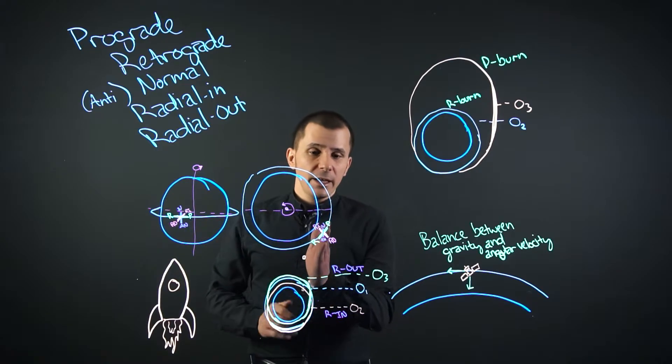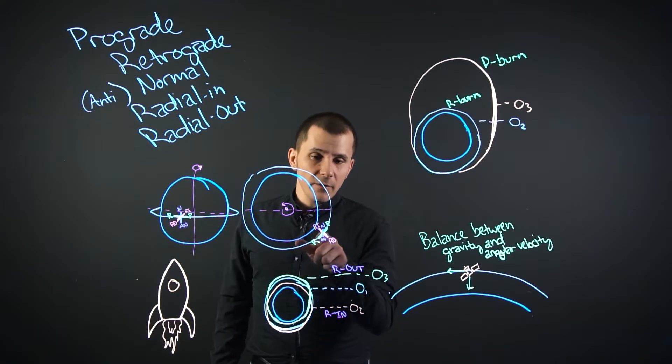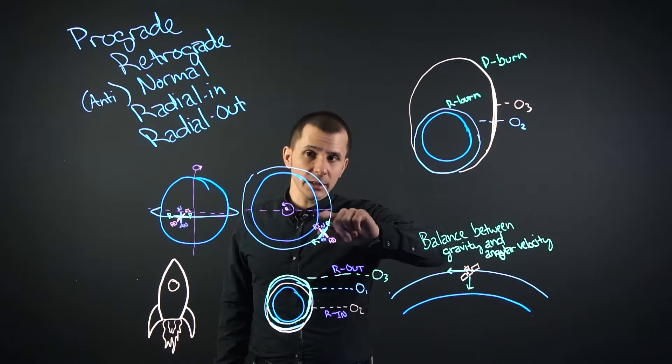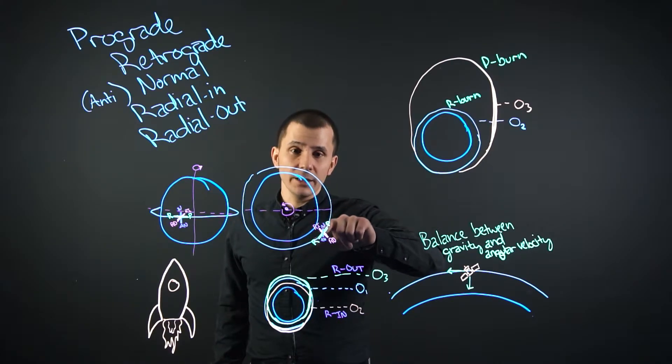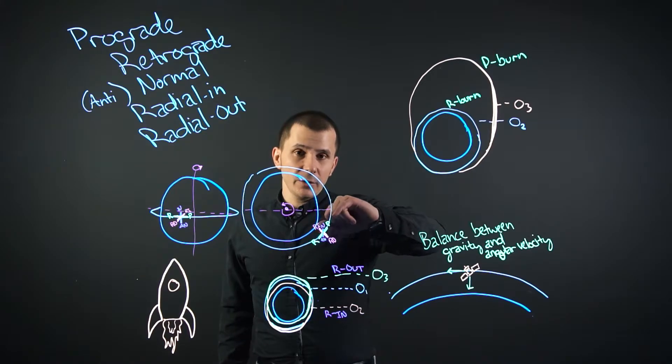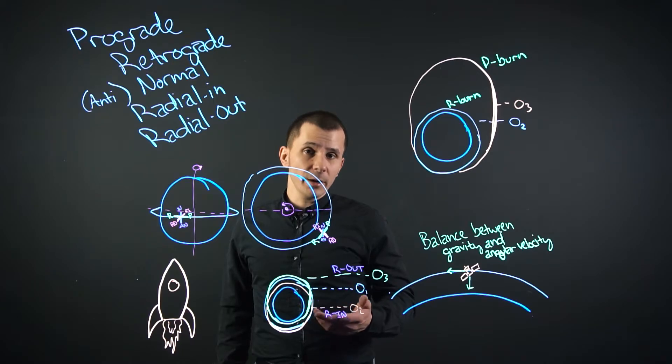So prograde is the angular velocity of the object along its orbital path, and if it is a circularized orbit such as this one here, the prograde is going to be the angular velocity. If you haven't taken a look at our circular motion video, I recommend you do it now before resuming this one.